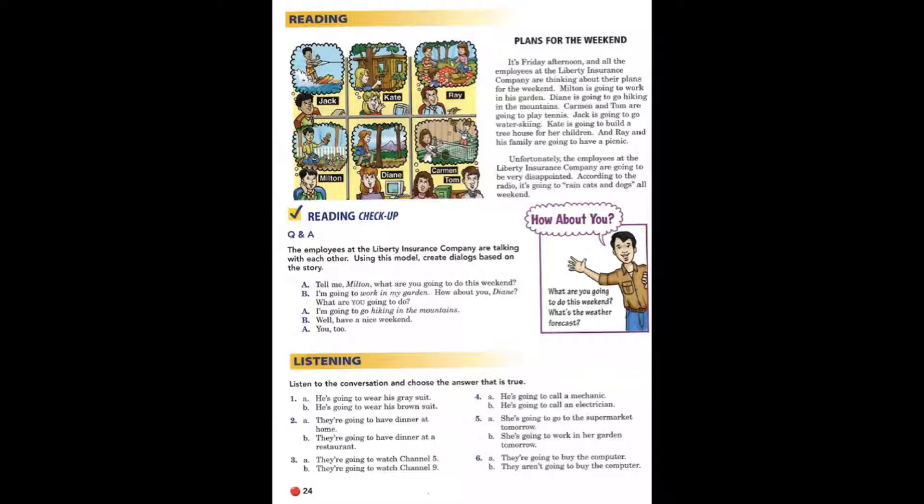Milton is going to work in his garden. Diane is going to go hiking in the mountains. Carmen and Tom are going to play tennis. Jack is going to go water skiing. Kate is going to build a treehouse for her children. And Ray and his family are going to have a picnic.